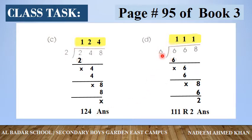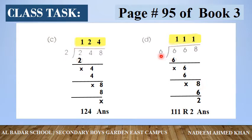اب next question ہے: 668 کو 6 سے divide کرنا ہے۔ 6 کا table پڑھیے: 6 ones are 6 — 6 لگا دیجیے، 6 میں سے 6 subtract کریں — کچھ نہیں بچا۔ دوسرا number bring down کریں، 6 ones are 6 — 6 لگا دیجیے، 6 میں سے 6 subtract کریں — کچھ نہیں بچا۔ پھر 8 bring down کریں: 6 ones are 6 — 8 میں سے 6 subtract کریں، remainder 2 آیا۔ Quotient 111، remainder 2 — یہ ہمارا جواب ہے۔